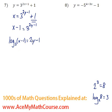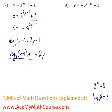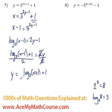I still want to isolate y, so I'm going to add 1 to both sides of the equation. That gives log base 3 of (x minus 1) plus 1 equals 2y. Then we divide both sides by 2, so y equals log base 3 of (x minus 1) plus 1, all over 2.